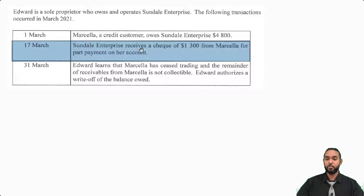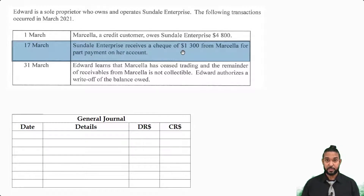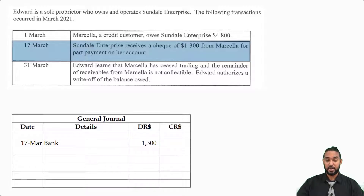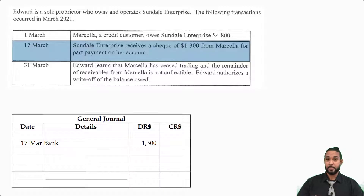On the 17th, Sundale Enterprises receives a check of $1,300 from Marcella for part payment in her account. So we are Sundale — we receive a check, which means we are getting money and our bank account balance is going to increase. Bank is an asset, and to record an increase in an asset we have to debit the asset account. Remember, when you're doing journal entries, the debit entries come first and the credit entries follow second and are indented relative to the debit entries. What account are we going to credit? I use a bit of a hack: credit where it's coming from, debit where it's going. The value here is coming from Marcella — Marcella is paying us — so we credit Marcella and debit bank.